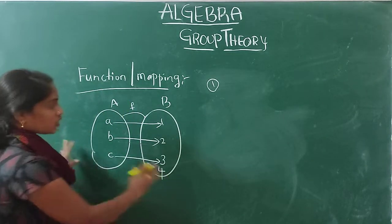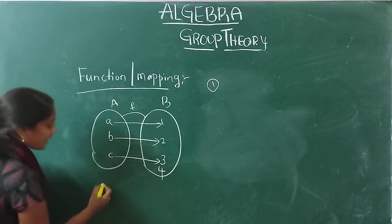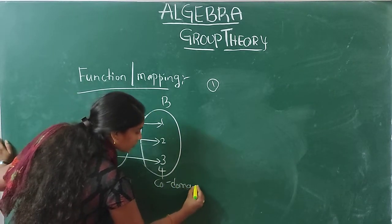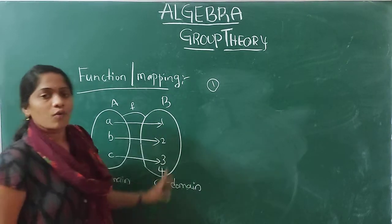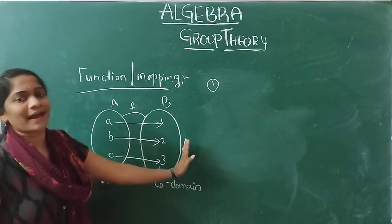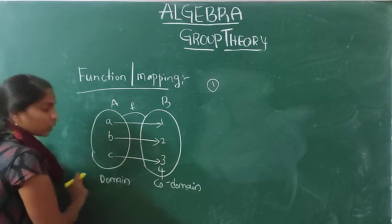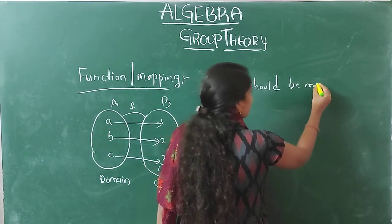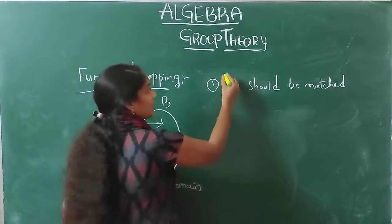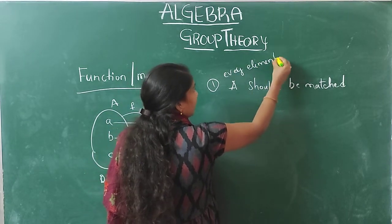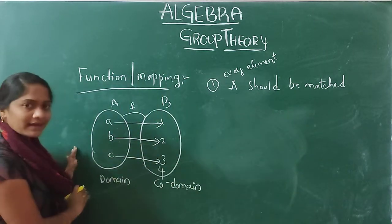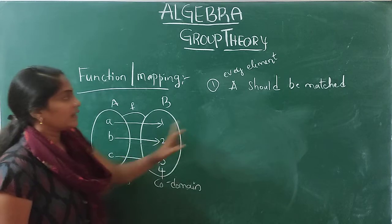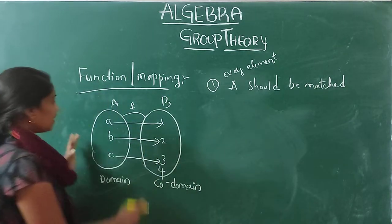Now point number one: A is represented as the domain and B is represented as the codomain. The first property is that every element of A — that is, every element of the domain — should be matched to some element in B. No element in the domain should remain unmatched or idle.